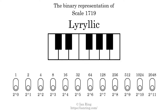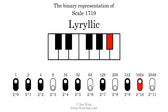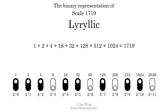The binary representation of this scale is determined by mapping tones of the scale to binary digits. Each binary digit represents a power of 2. To get the scale number, we add the powers of 2 together. The powers of 2 that are present in the scale, all added together, equals 1719.